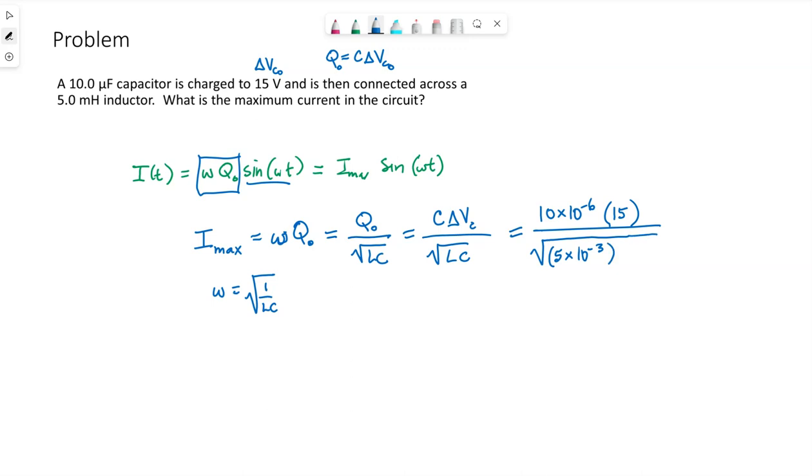I need to divide that by the square root of L, which is 5 millihenry, so 5 times 10 to the negative 3, then times C, the 10 microfarads again, 10 times 10 to the negative 6.